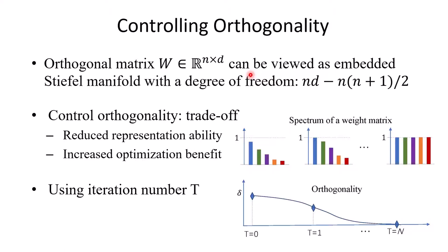Orthogonal matrices can be viewed as an embedded Stiefel manifold with limited degrees of freedom, so it constrains the model's representation ability. It is necessary to control the orthogonality to trade off between the reduced representation ability and the increased optimization benefits. Clearly, our method can naturally control the orthogonality by using the iteration number.